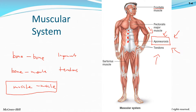The aponeurosis gets soft once cooked down. On top of your head, all your muscles attach to the aponeurosis — without it, you'd have a thick, heavy head. The longest muscle in your body is the sartorius, running from the hip all the way to the front of the knee.